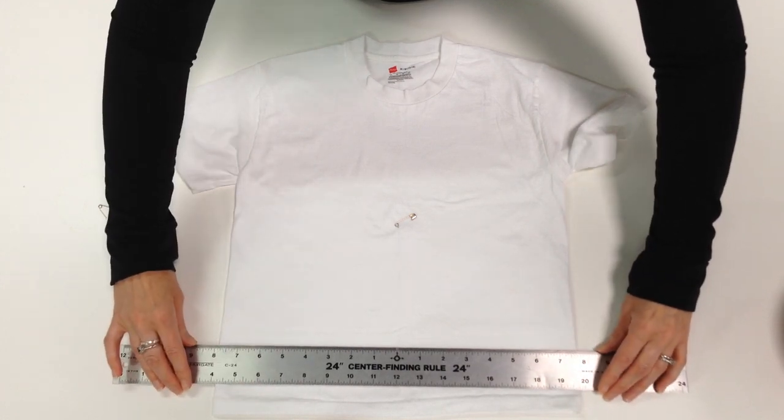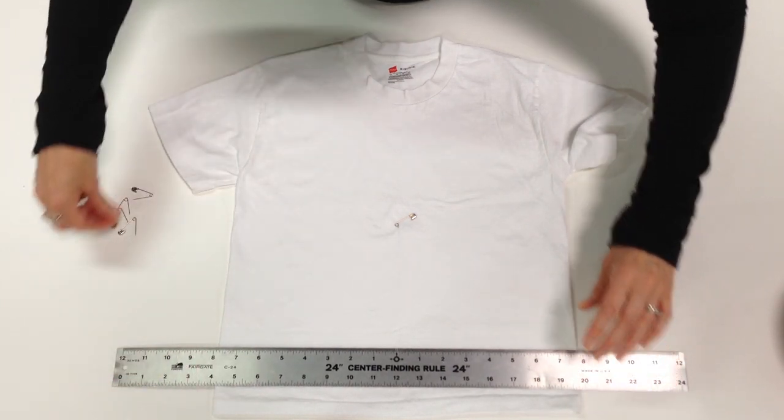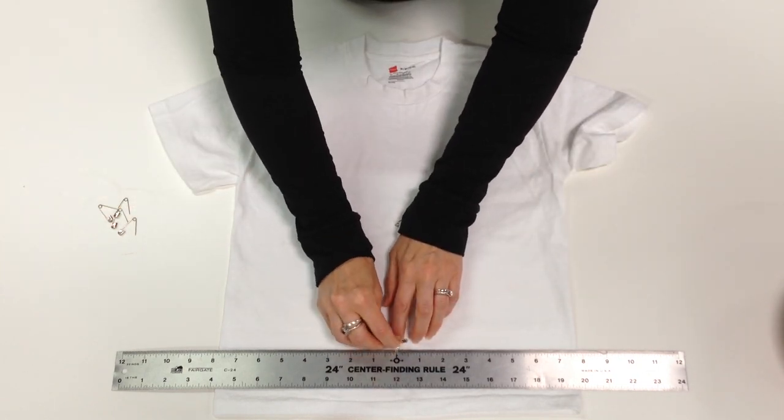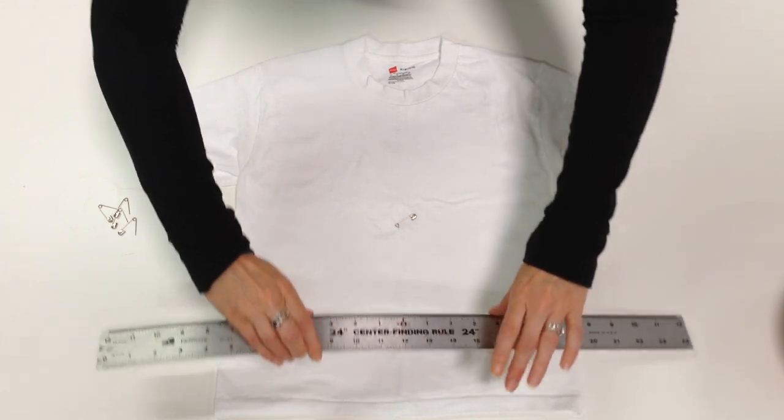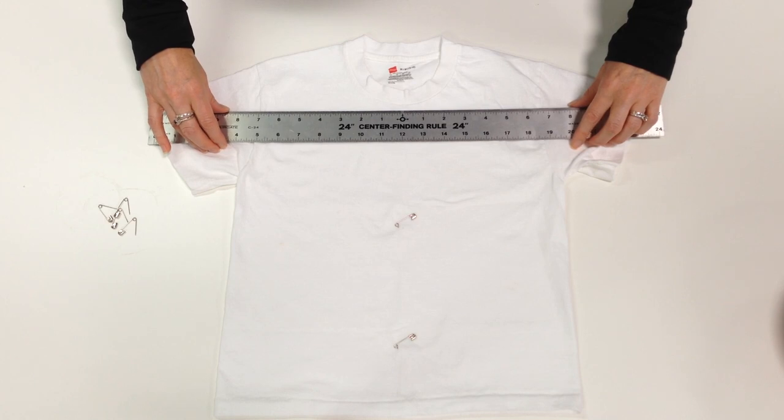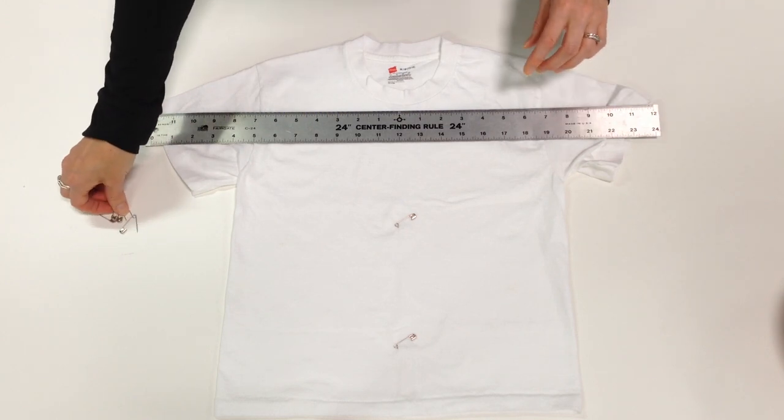Then I'm going to mark another point that's just a couple of inches from the hem, then put the third one up by the neckline. This area can get kind of bunchy and weird once we start folding and turning, so it will be helpful to have a mark up here.